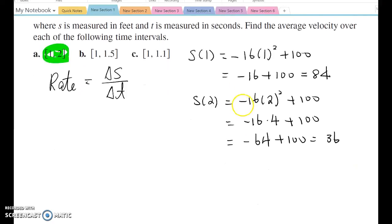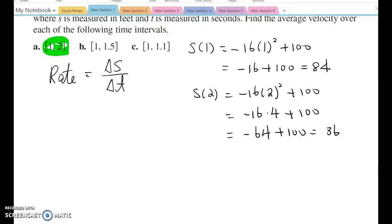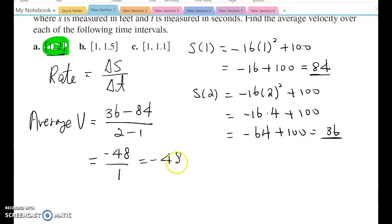So based on this, now we can set up the rate, which means average velocity. Average velocity equals 36 minus 84, so 36 minus 84 over 2 minus 1. So it's going to be negative 48, negative 48 over 1. So average velocity will be negative 48 feet per second.